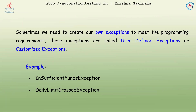So how can you do that? For example, an insufficient funds exception — if you are developing a banking-related application and somebody tries to withdraw money, you need to tell the customer about an insufficient funds exception. Or a daily limit cross exception: a customer can withdraw only 10,000 per day; if they try to withdraw more than that, you need to throw an exception. We'll discuss this with an example in Visual Studio Code.